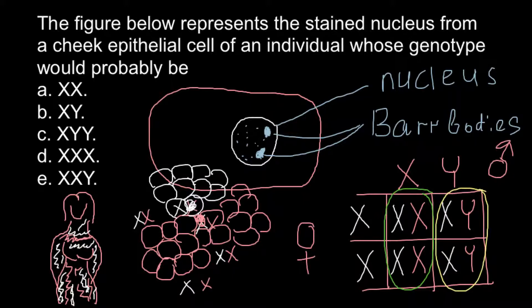The normal genotype of the female would be XX, and one bar body would be present in any cell. For the male, the normal genotype would be XY, and a bar body wouldn't be formed at all because there is only one X chromosome per cell and it cannot be turned off.